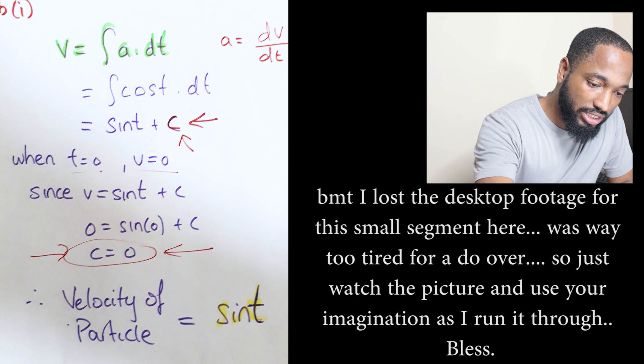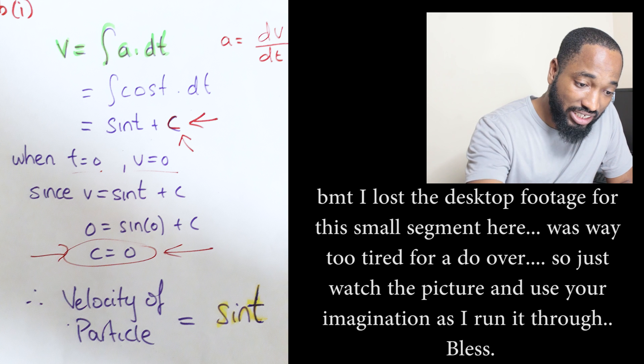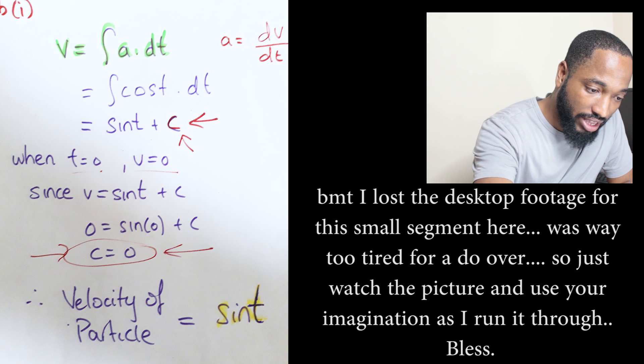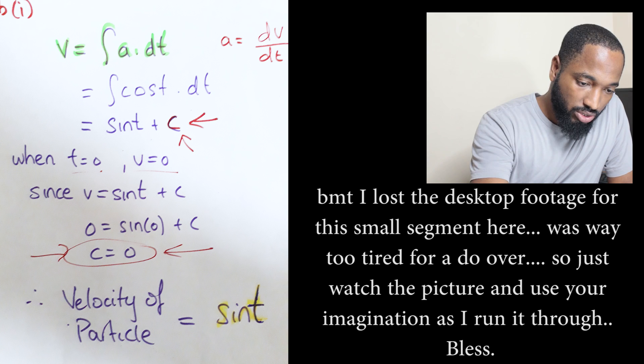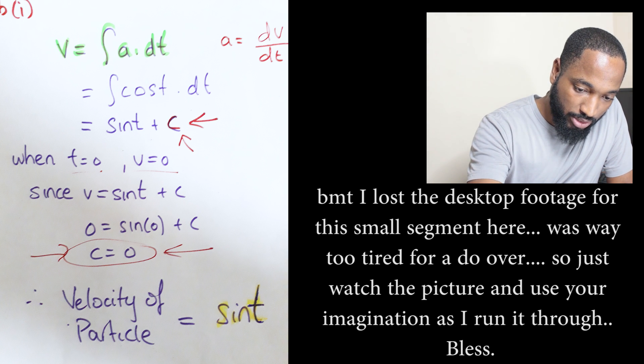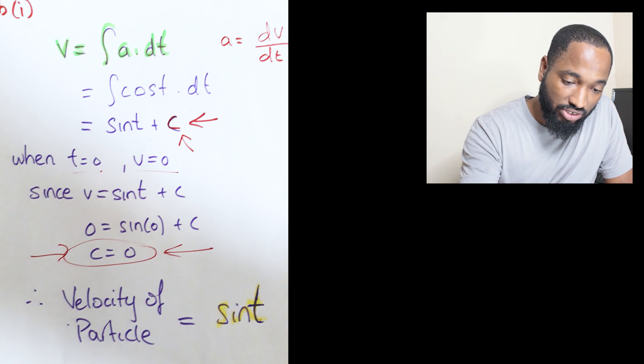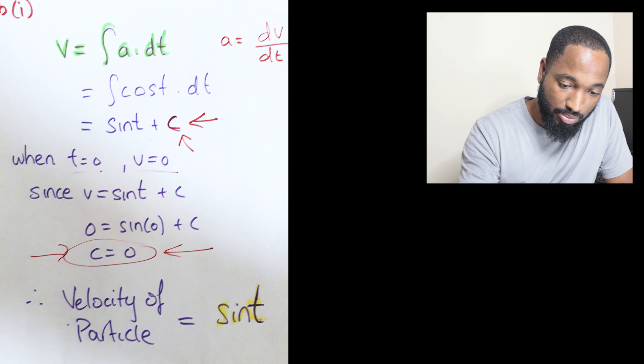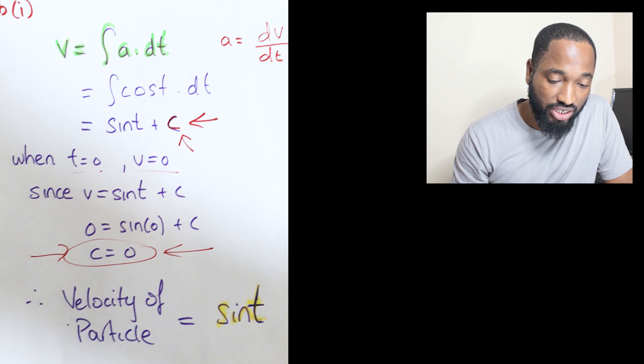You need to recall that velocity equals the integral of acceleration with respect to time. So we're finding the integral of cos t with respect to time. Recall that when you integrate cosine you get sine, so the answer is sin t plus C, a constant of integration.